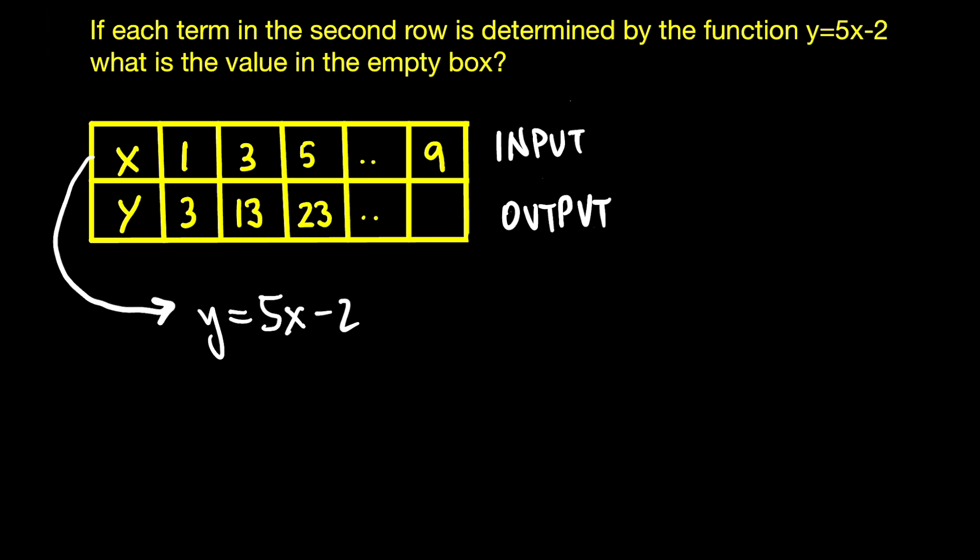In the y row. And if we go ahead and try it out, if we choose the values in the first column, here what it's telling you is that if you plug the value of 1 for x, you're going to get 3 as your answer for y.